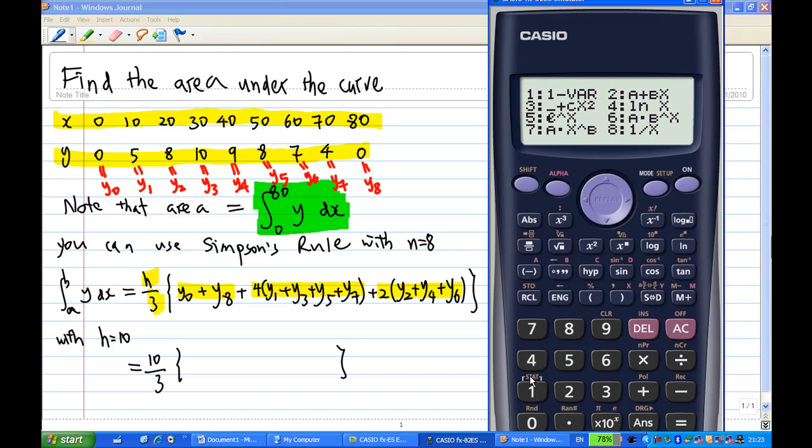Now I have a 2 column table. And I'm going to input all the Y now. Notice there's Y here. The value of Y is 0. First value is 0. Then 5, then 8, then 10, then 9, then 8, then 7, then 4, then 0. This is Y8.